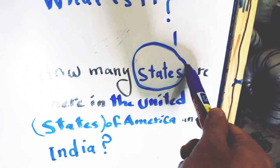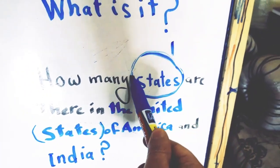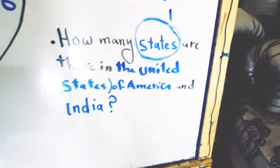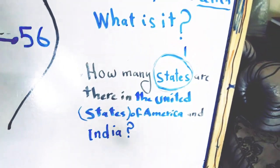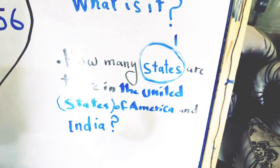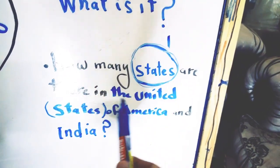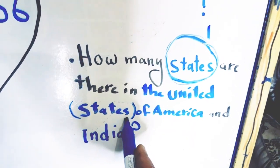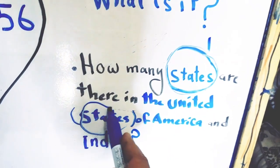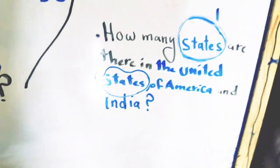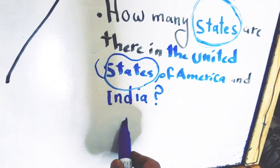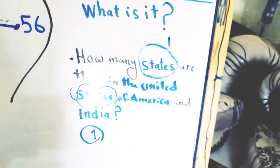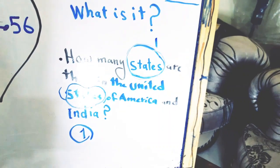How many times does the word 'states' appear in this question? Count the word 'states' in the question: 'How many states are there in the United States of America and India?' You will find that there is only one word titled 'states'. So the answer is one, because the question asks about the word 'states', not about the actual number of states in America.